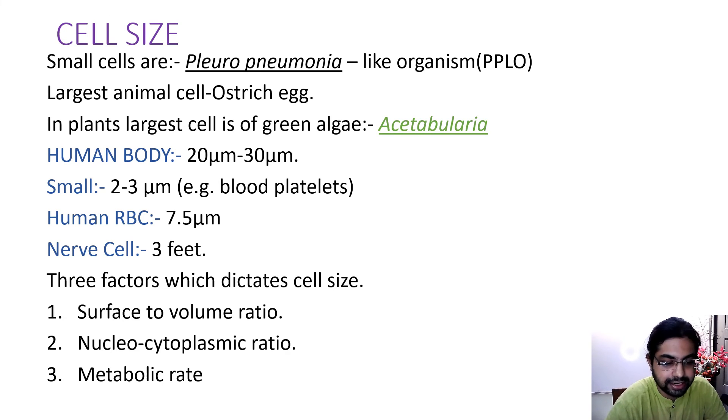Three factors which dictate cell size: what are the factors that govern the cell size? It is the surface to volume ratio, nucleo-cytoplasmic ratio, and metabolic rate. You should remember these three factors. If a cell does so much of activity, it should have a large size. So metabolic rate determines the cell size. If the nucleo-cytoplasmic ratio is large enough, the cell size is large.